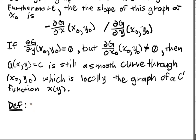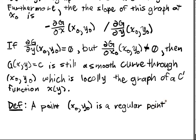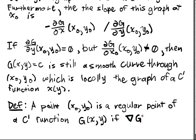We call a point (x0, y0) a regular point of a C1 function g(x, y) if the gradient of g evaluated at (x0, y0) does not equal 0.